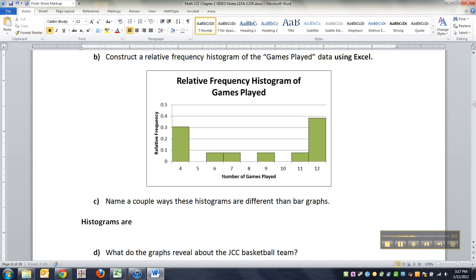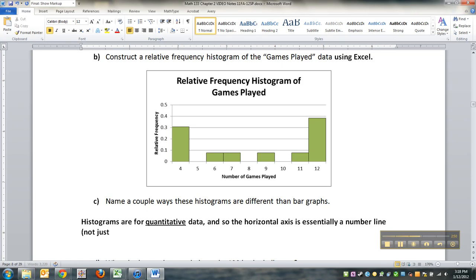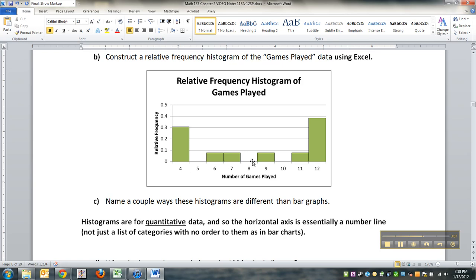Histograms are for quantitative data. And so the horizontal axis is essentially a number line, not just a list of categories with no order to them as in bar charts. And hopefully that makes sense. Four has to be lower than five, has to be lower than six because of the way number lines and numbers work.